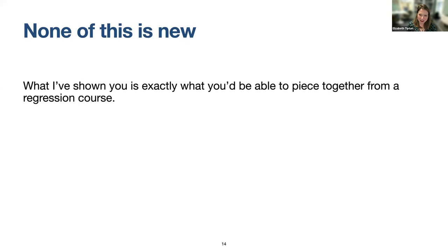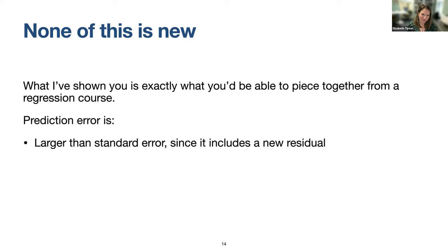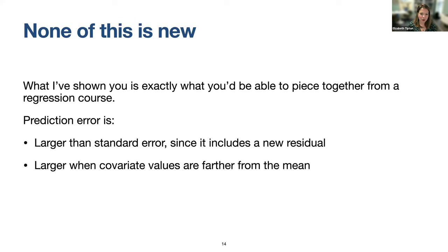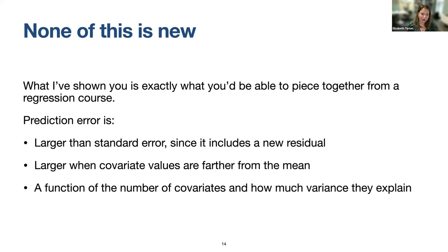This is mostly not new — you could piece it together from a regression course. Things like the variance term with 1 plus P show up in Mallow's CP and various intro stats measures. The addition here is the variation tau-squared at the end — that's quite different. We know prediction error is larger than standard error because it includes a new residual; it's larger when covariate values are farther from the mean; and it's a function of the number of covariates P and how much variation they actually explain.